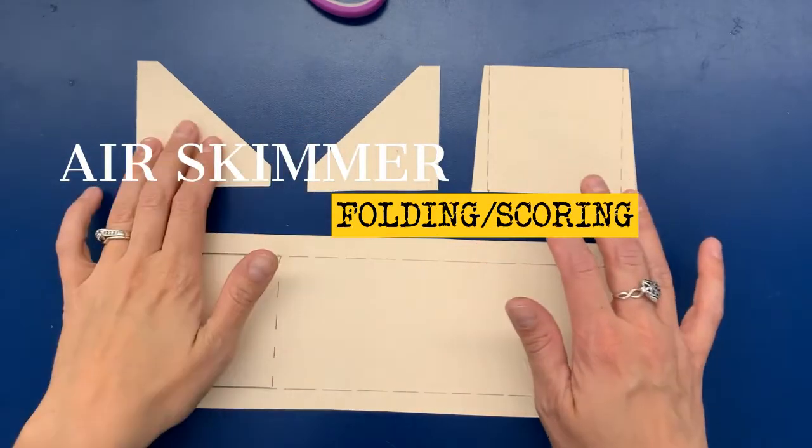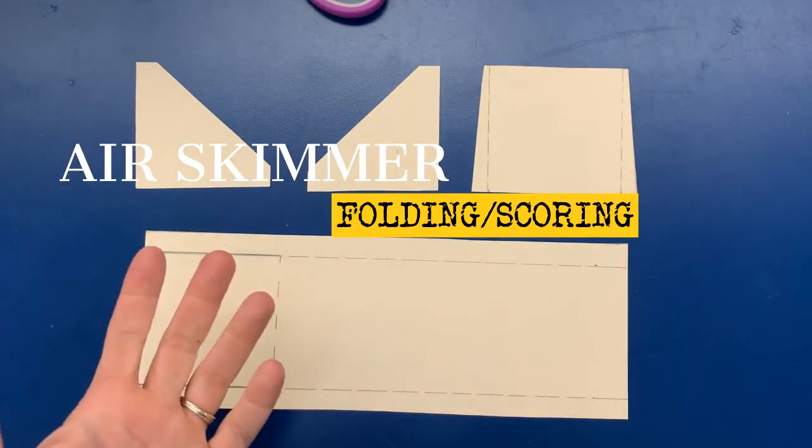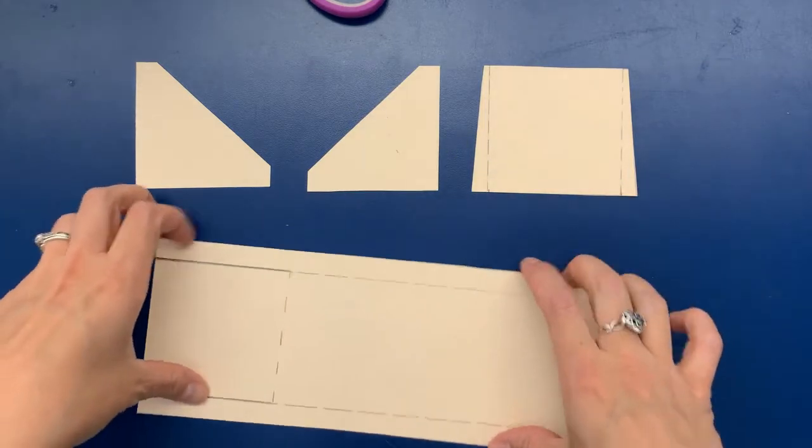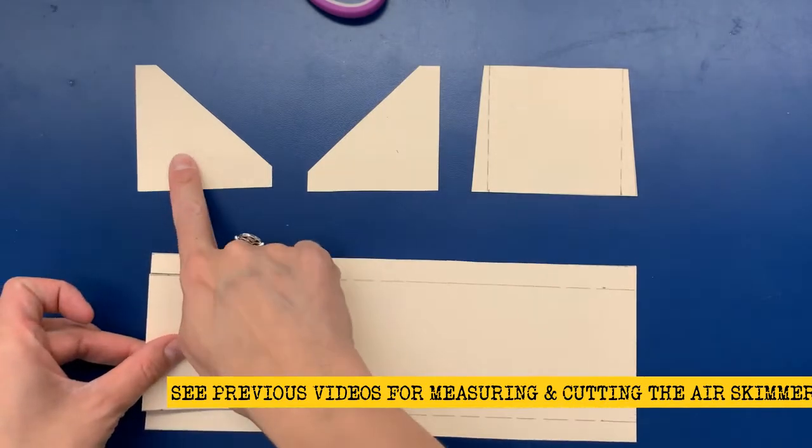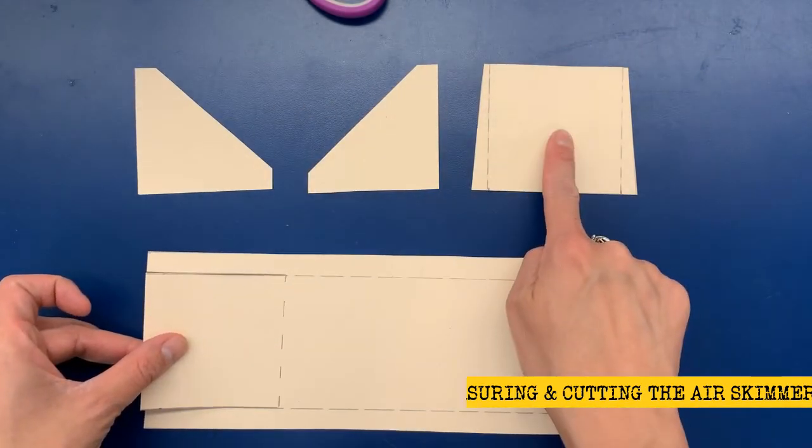All right, so here we have my air skimmer. Hopefully yours is colored, decorated, and cut out. You should have four parts: main body, air fin, fin, and an air scoop.